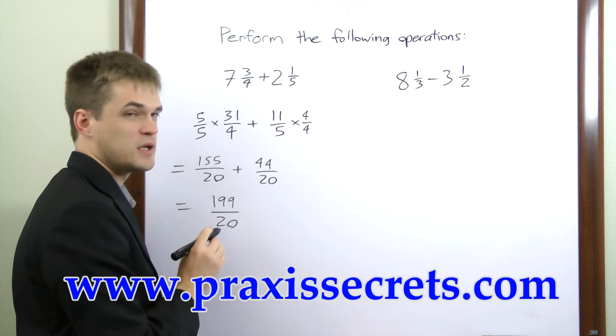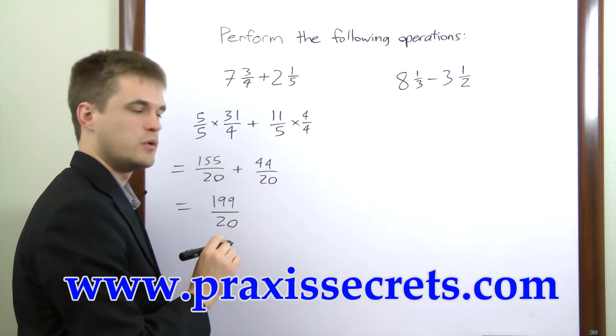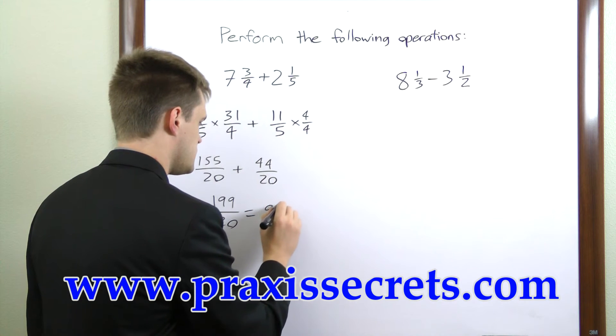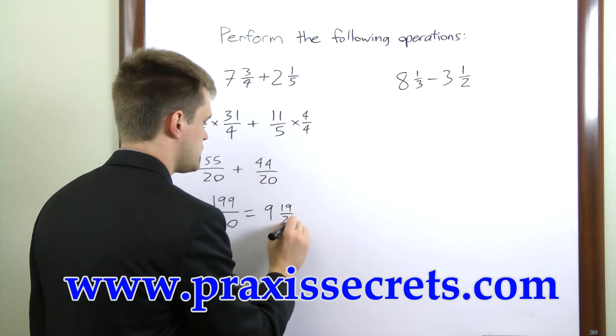Now 20 goes into 199 9 times with a remainder of 19 so this is equal to 9 and 19 twentieths.